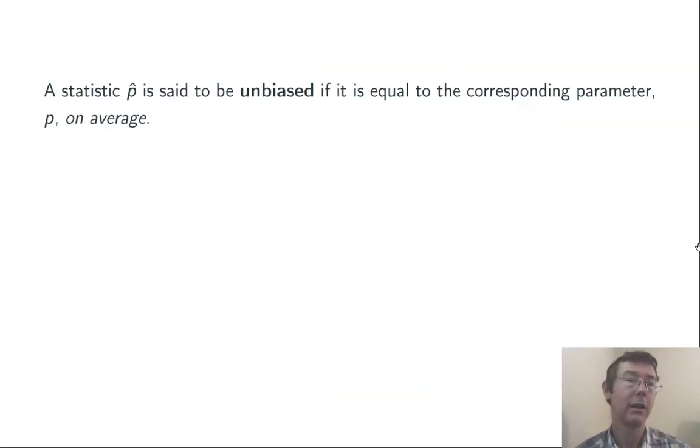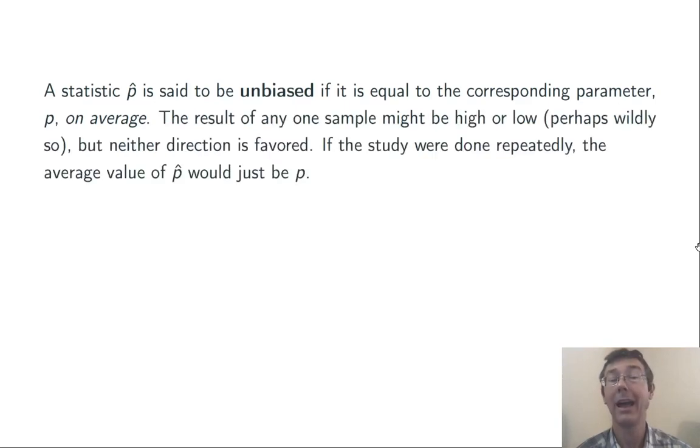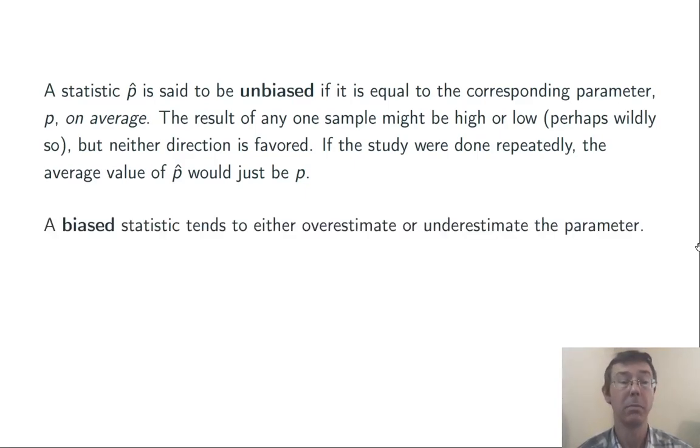This leads us to the concept of bias. A statistic, p hat, is said to be unbiased if it's equal to the corresponding parameter, p, on average. So, any one result could be high or low, maybe even very high or very low, but neither direction is particularly favored. If the study is done repeatedly, the average value of the outcomes of all those p hats will just be the parameter p.